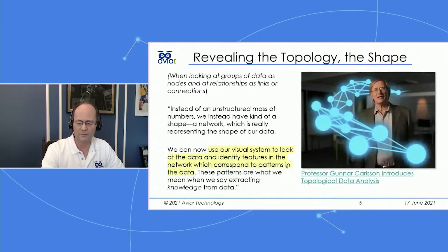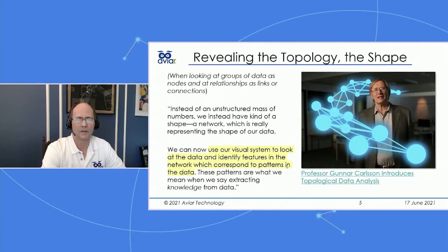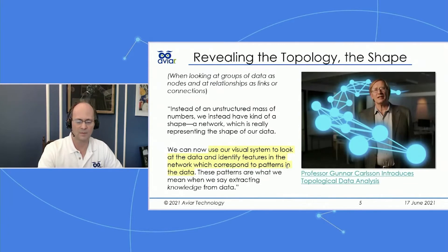For me, the interest when it relates to Neo4j particularly is in the three-dimensional topology of Neo4j graphs. This is a screen cap from a data scientist at Stanford, Professor Gunnar Carlson, who talks about how when you start linking nodes and relationships together from an unstructured mass of data, you reveal a shape — a topology of the data — and when you visualize that in three dimensions, our human natural ability to recognize patterns can really come into play.